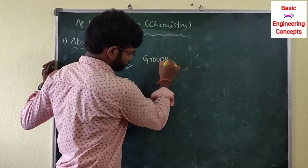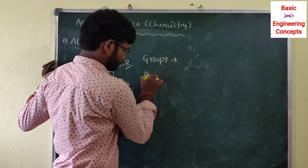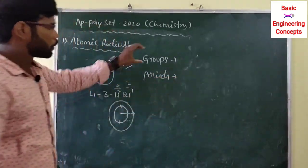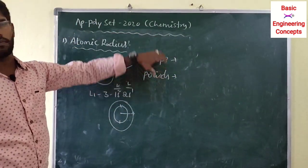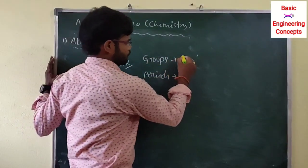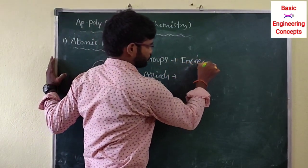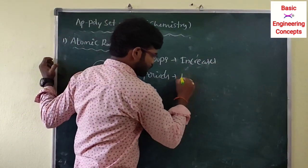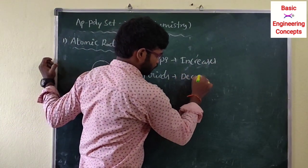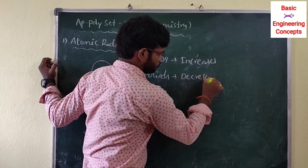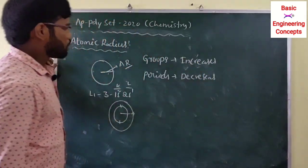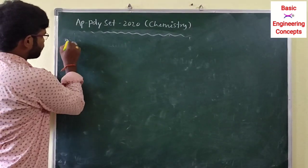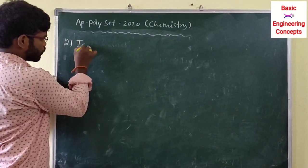In groups, going from top to bottom, atomic radius increases. In periods, going from left to right, atomic radius decreases. This is a very important trend. The next property is ionization energy.